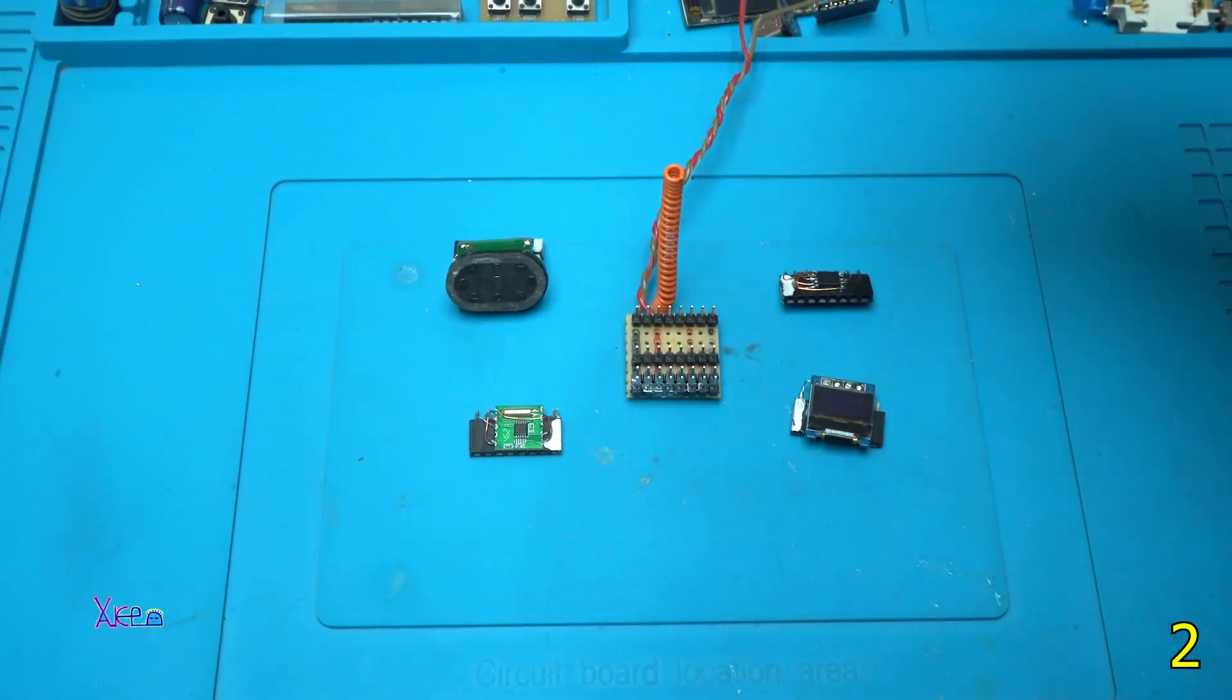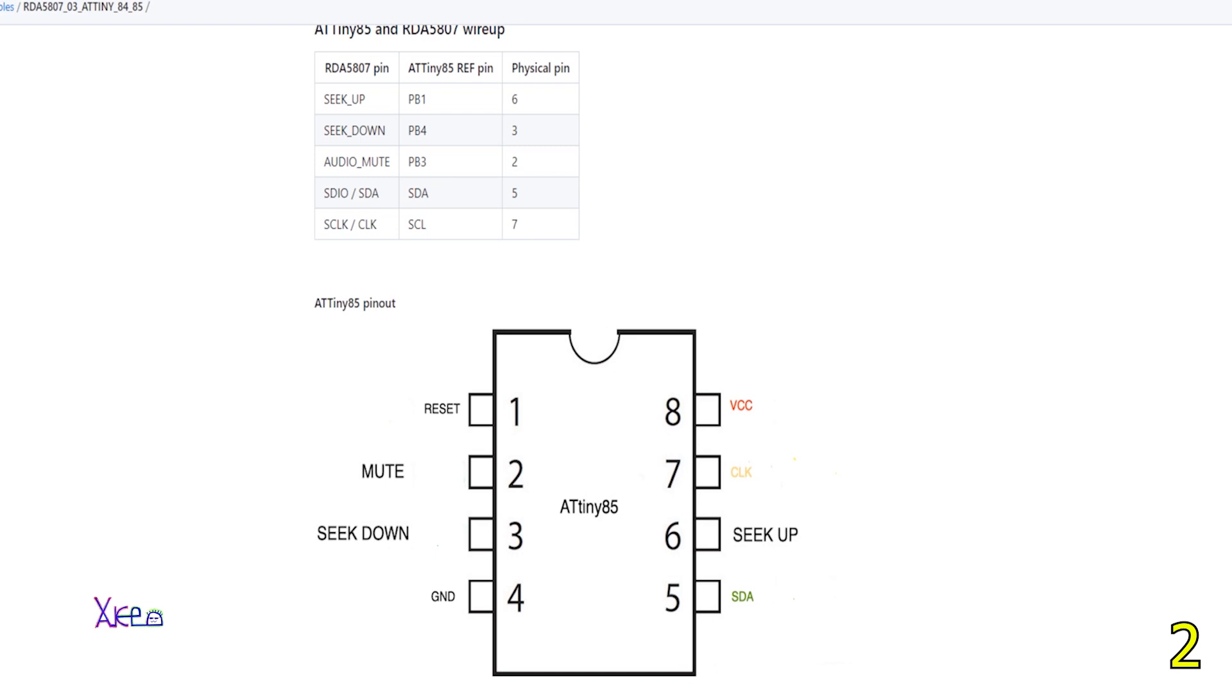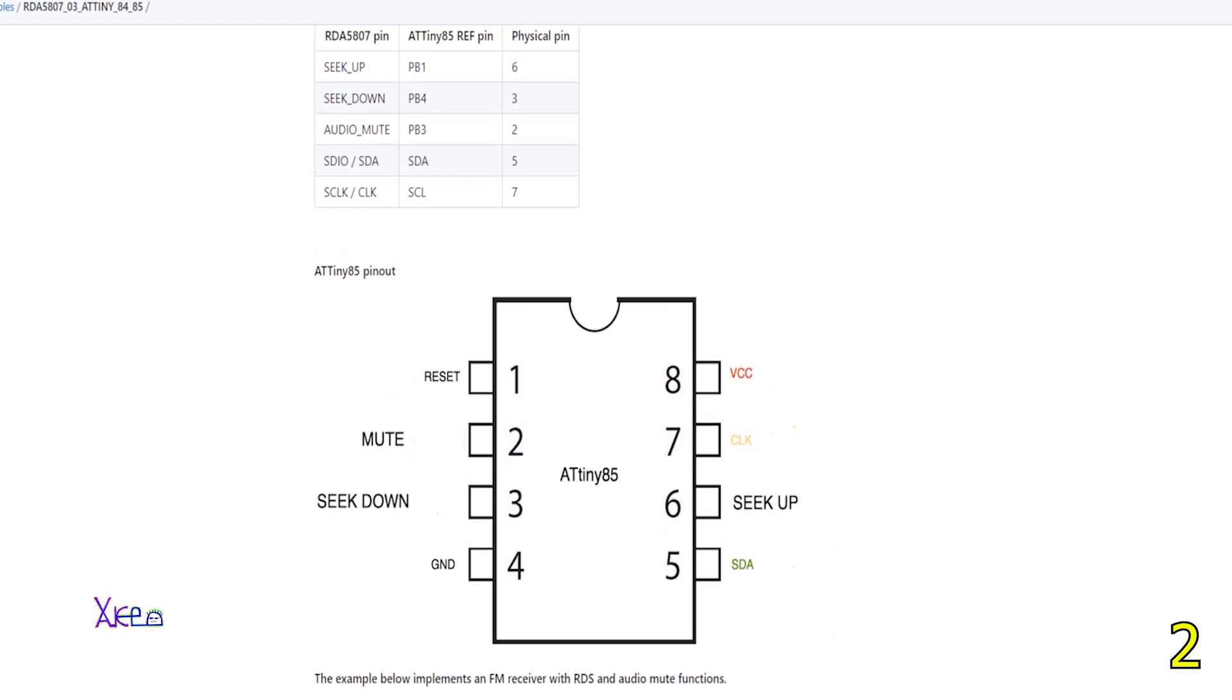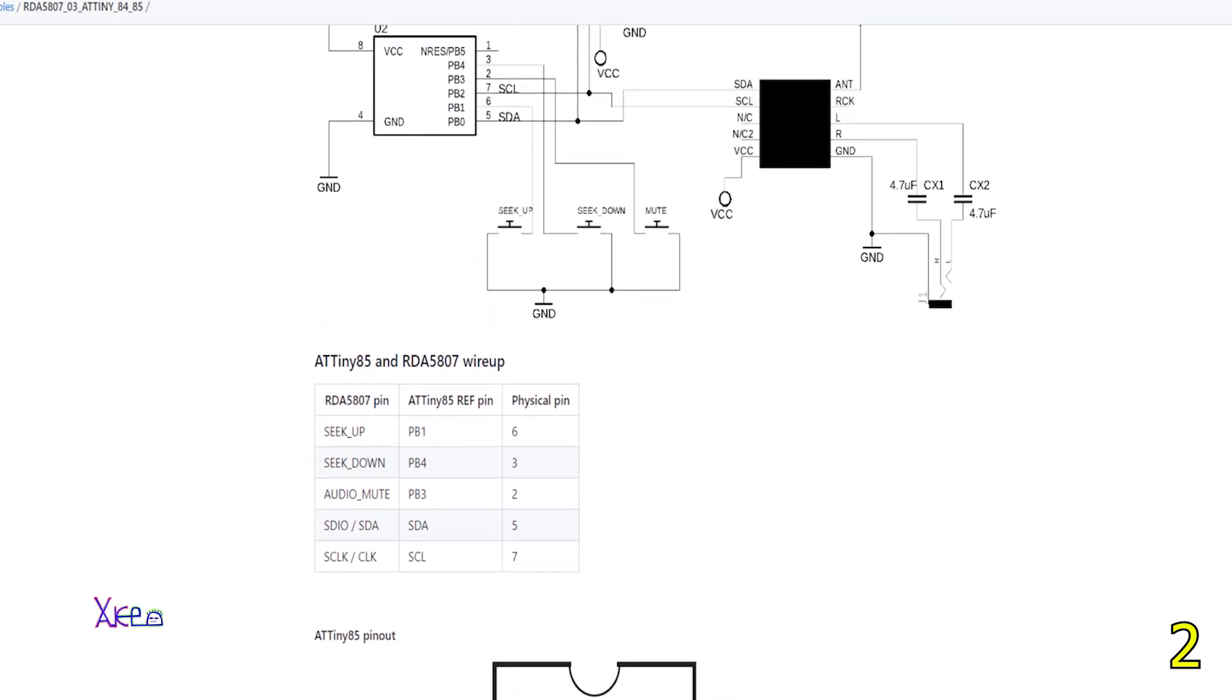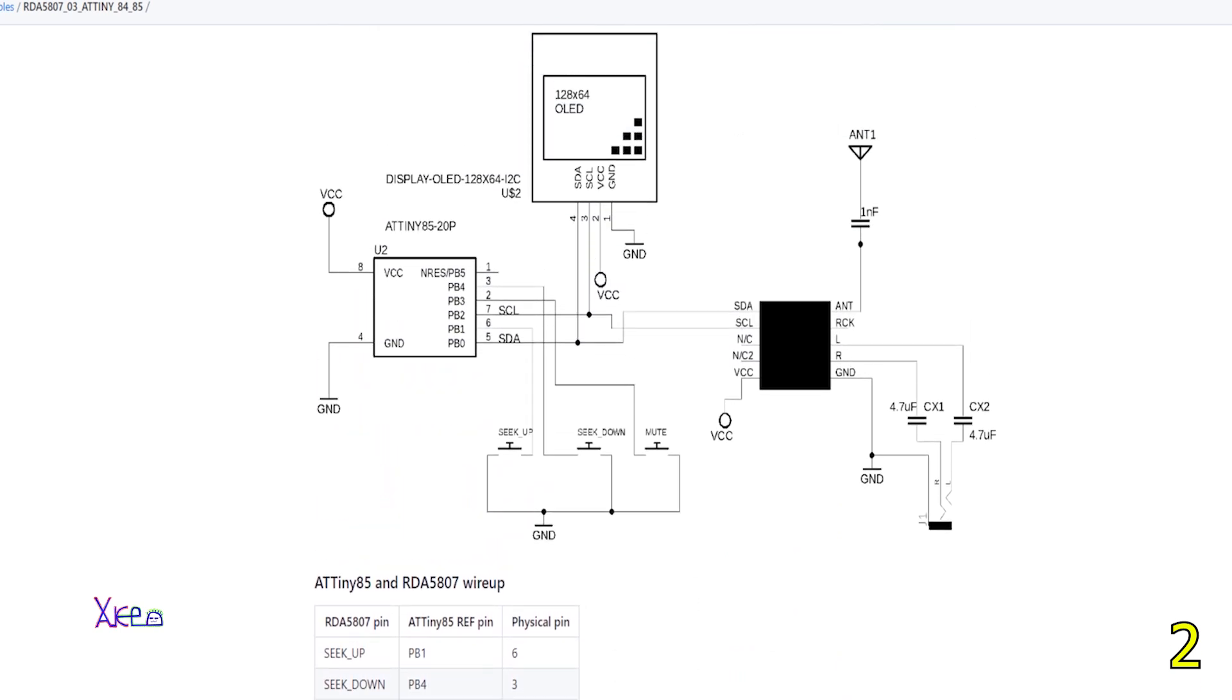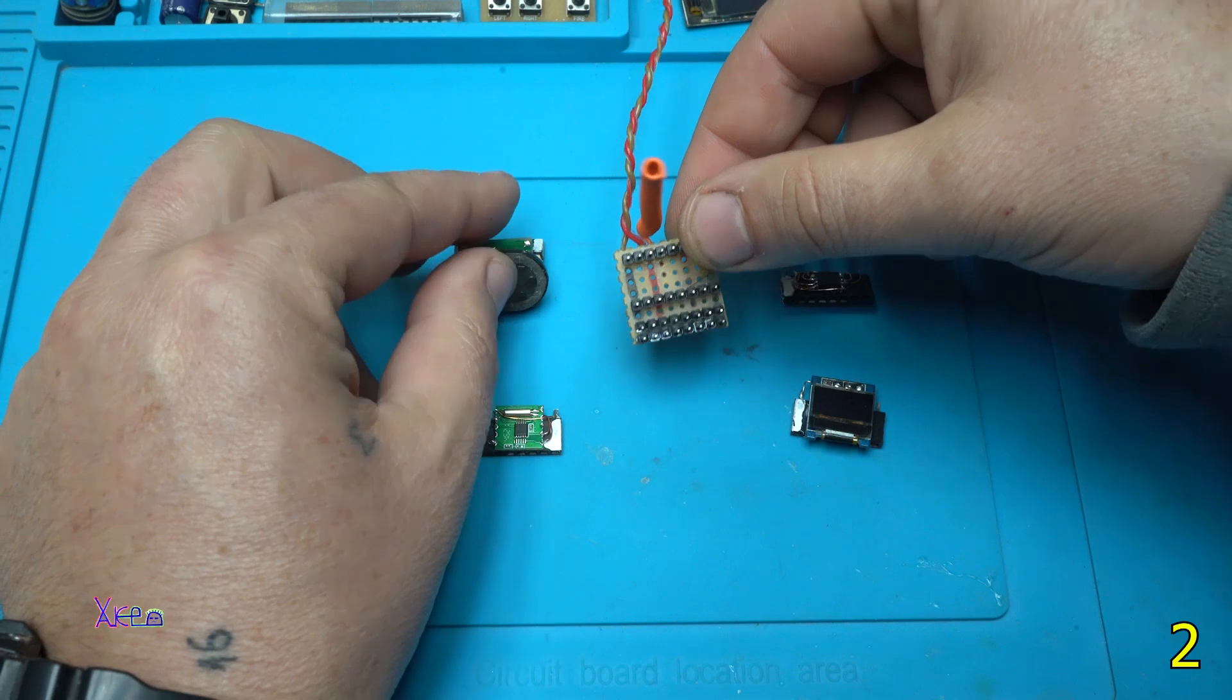In description below I will attach a link to a website where you can download the code and schematic for ATtiny85 or ATtiny84 microchip. You can see on the circuit diagram how is connected everything: the microchip, the microchip with the OLED screen and with the radio model.